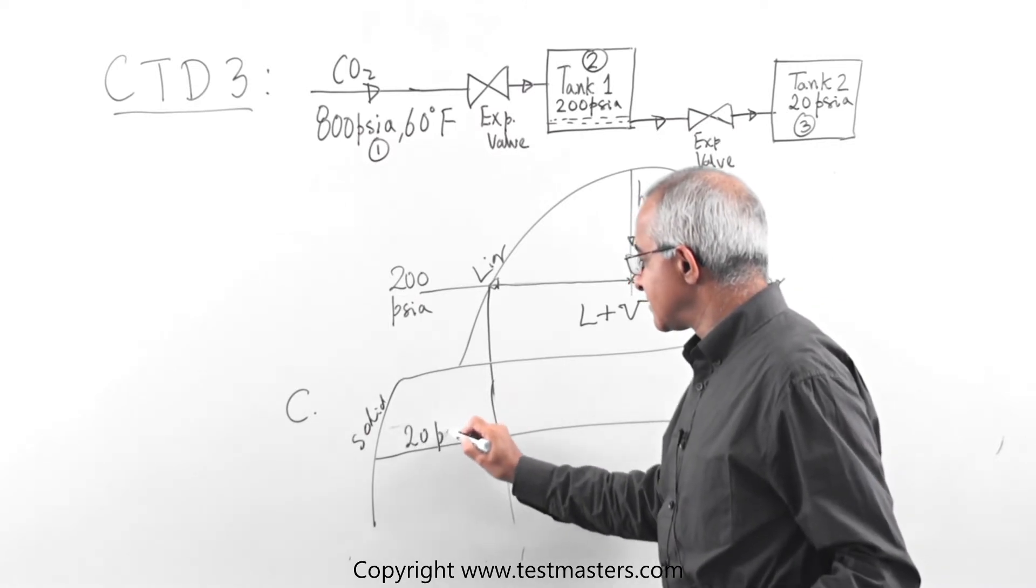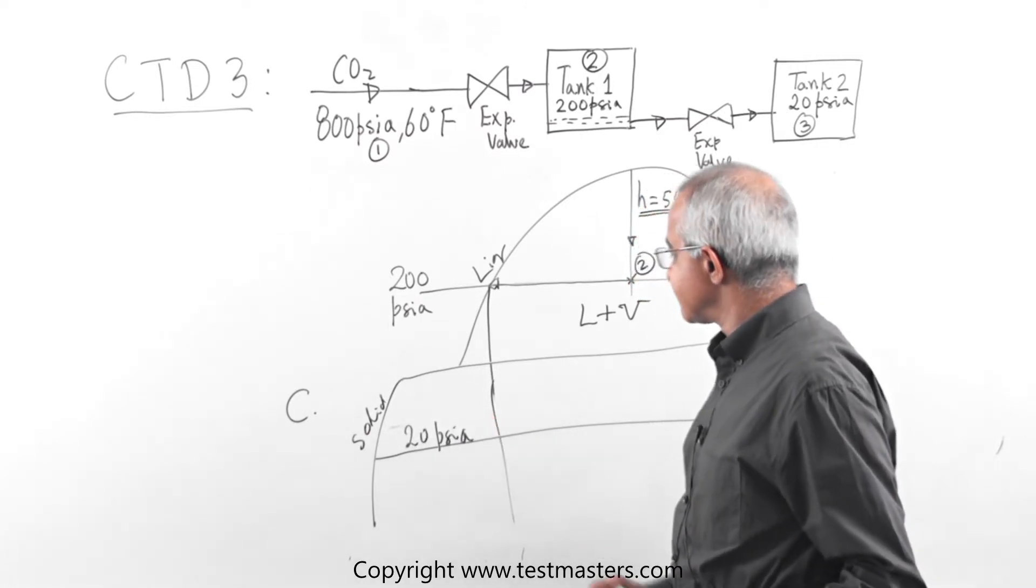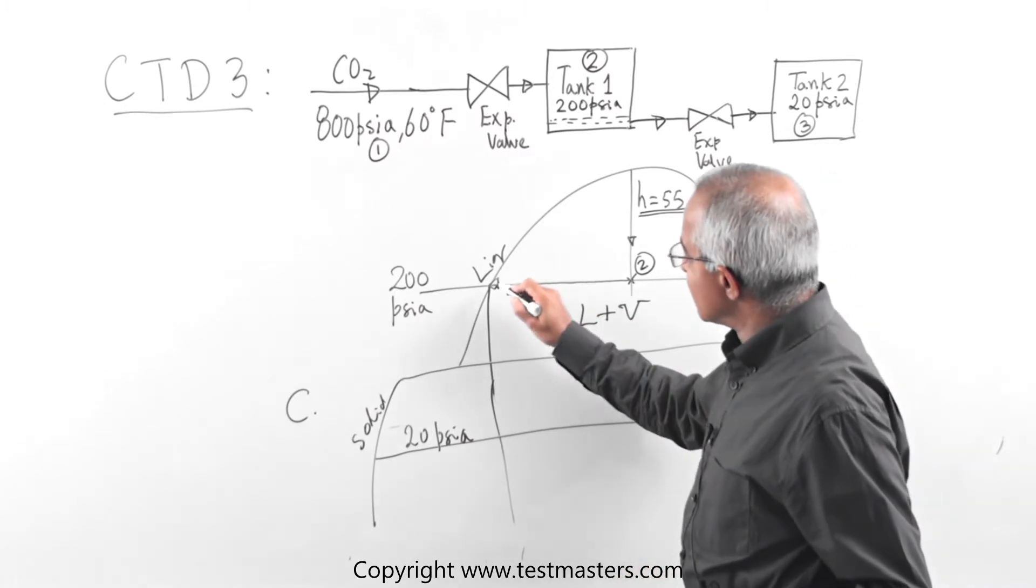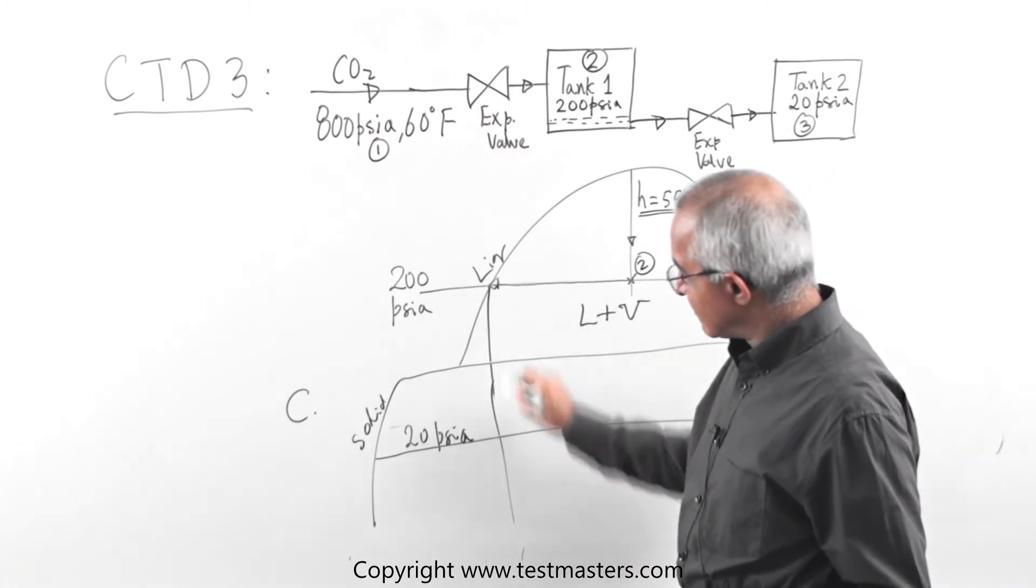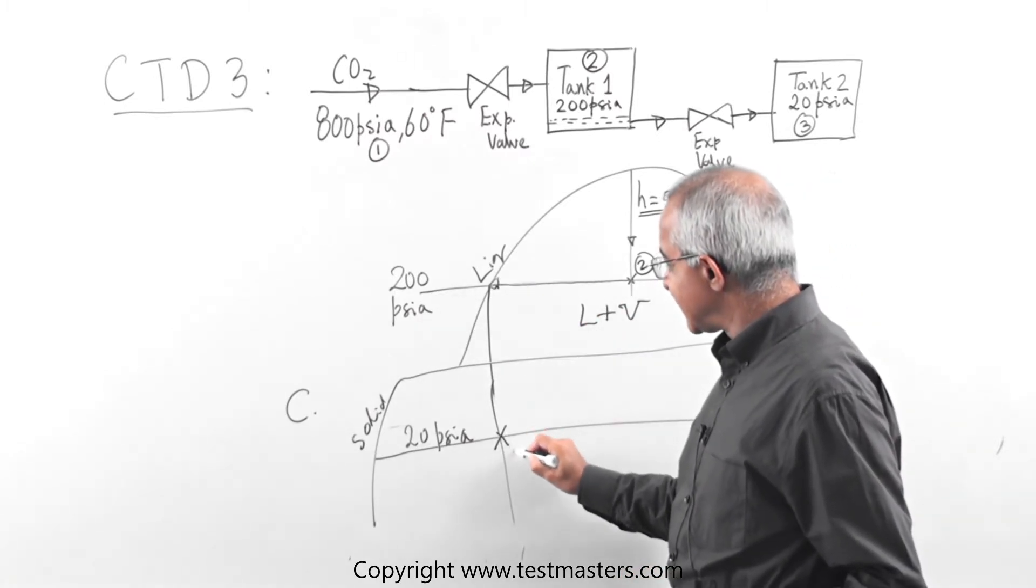20 psi pressure. Remember pressure is on the y axis. So go to the saturated liquid line, then go down to 20 psi. This is state 3.